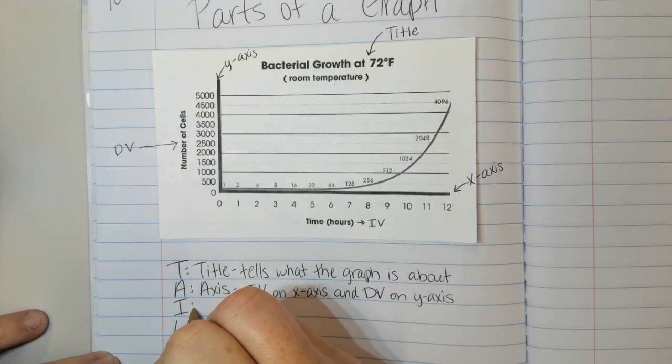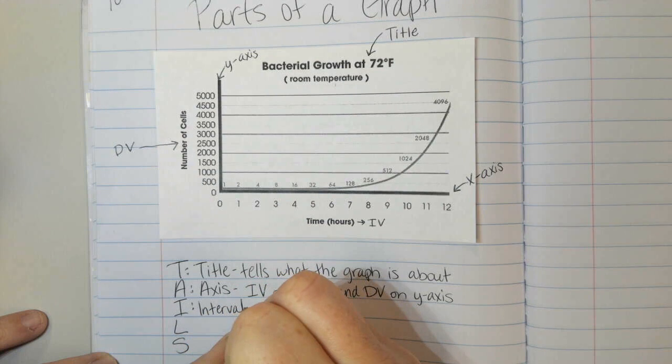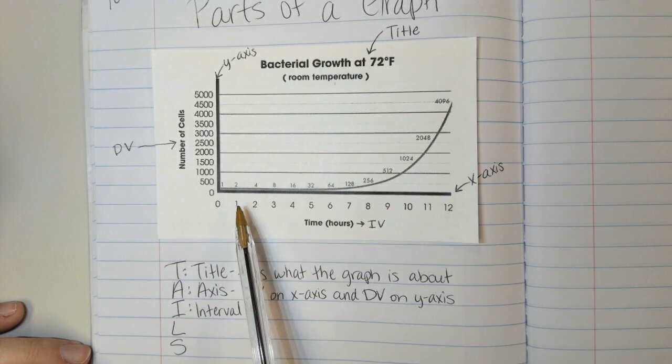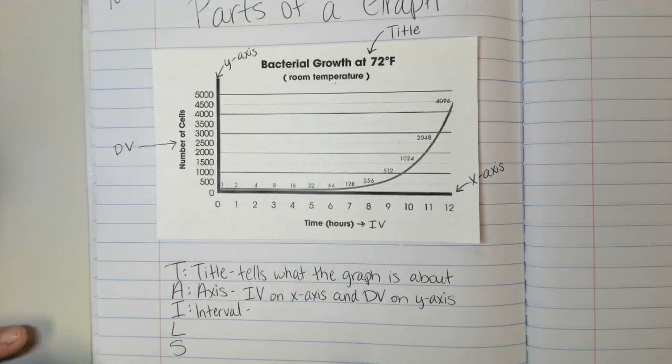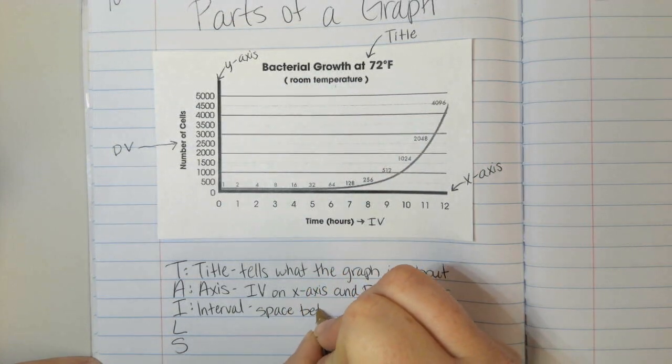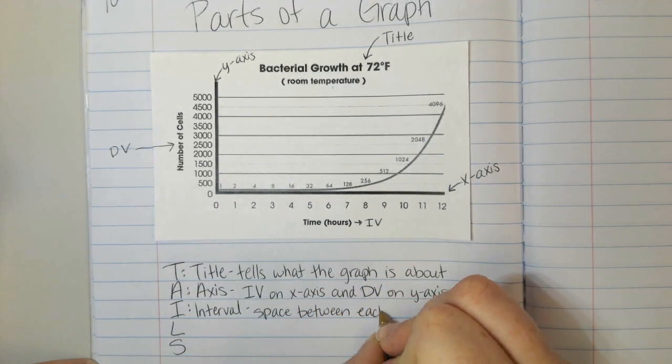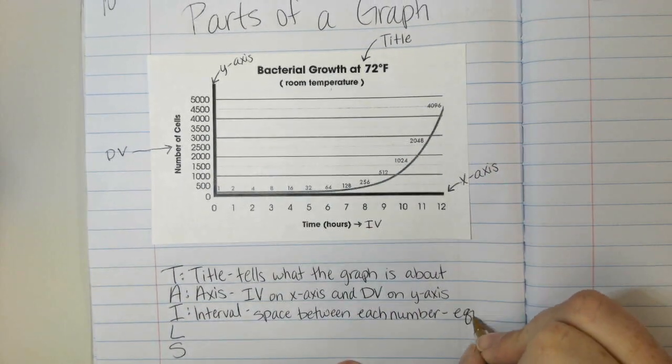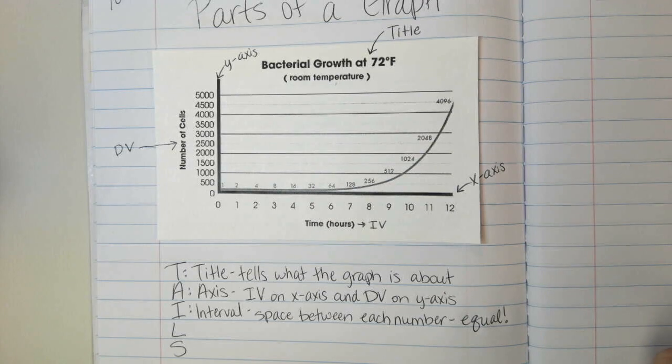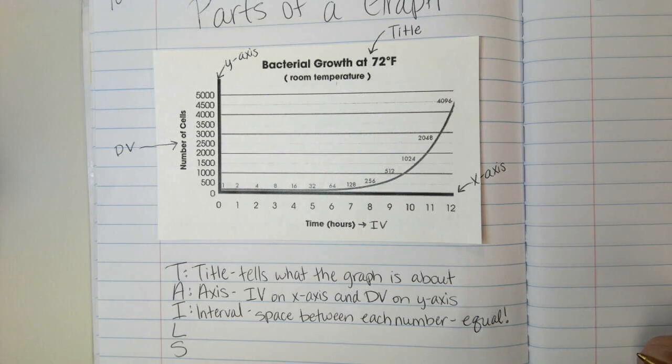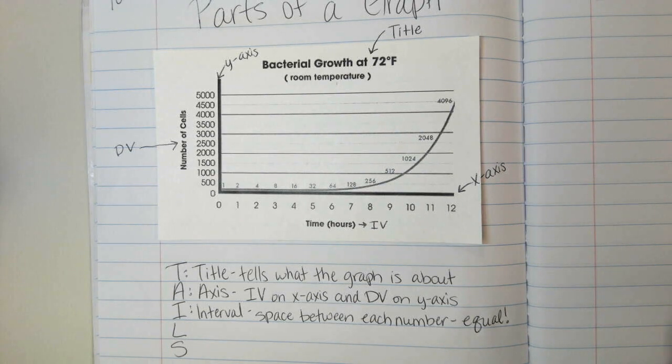The I stands for interval. Interval just means the space between something. So in this case, it's the space or the amount between each number on the axis. It's important to make sure that it is equal. So we're going to write space between each number, and I'm going to make a note: equal. You can choose to count by 1's, by 2's, by 5's, or 10's, whatever is appropriate for the data that you have, as long as it stays the same. You can't start counting by 5's and then switch to count by 10's and then go back to 5's.